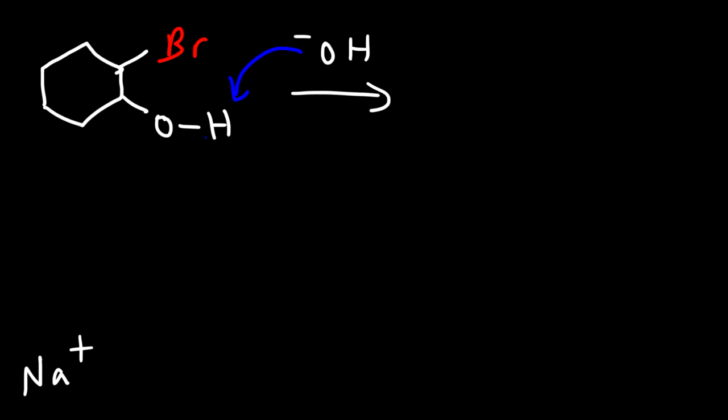Hydroxide is going to take the hydrogen away because it's a strong base. And strong bases are basically proton acceptors. So now we have an oxygen with a negative charge.